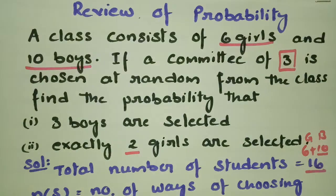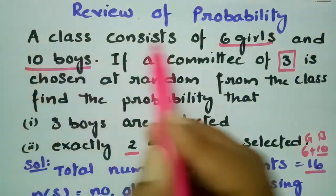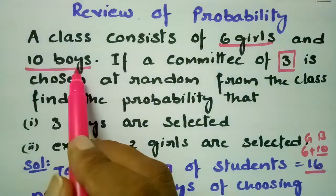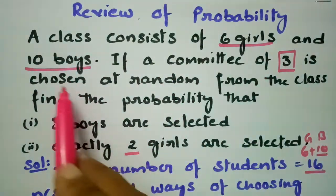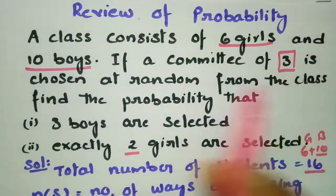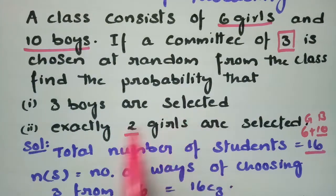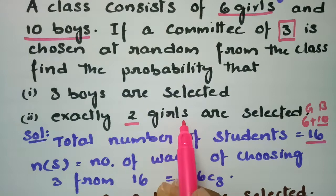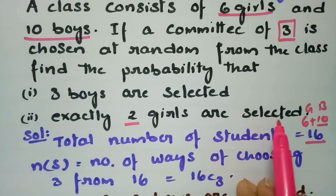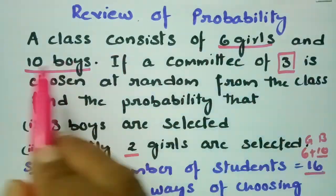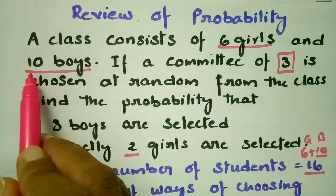Today's problem is on probability. A class consists of 6 girls and 10 boys. If a committee of 3 is chosen at random from the class, find the probability that 3 boys are selected, and exactly 2 girls are selected. Here there are 6 girls and 10 boys.